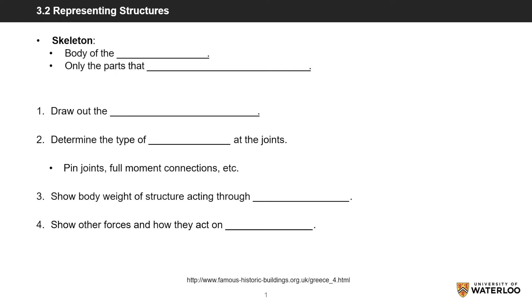When examining structures in real life, we usually extract the skeleton and use it for analysis. The definition of skeleton is the body of the system that consists only of the structural members learned previously, such as beams and columns, also known as the parts that can sustain loads.